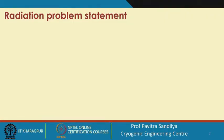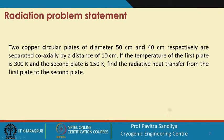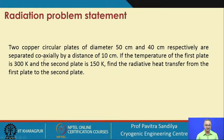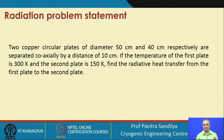Lastly, we have a problem on radiation heat transfer. We have two copper circular plates of diameter 50 cm and 40 cm respectively. The geometry of the surface is very important here. These two circular plates are separated coaxially — they share the same axis, one above the other — separated by a distance of 10 cm. The temperature of the first plate is 300 K and the other is 150 K, giving a temperature difference of 150 K.